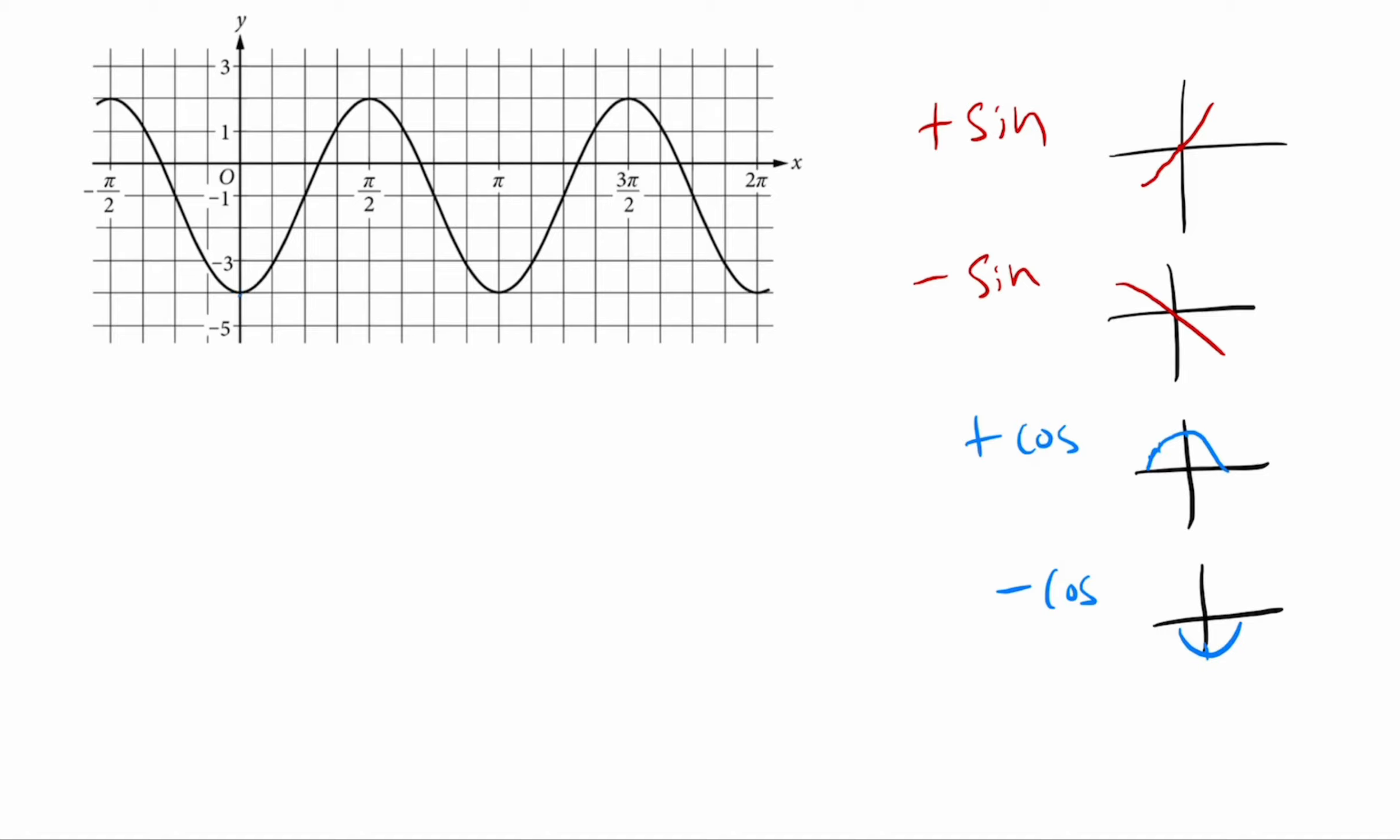With that in mind, since this starts at the minimum, we can use a negative cosine as our overall function. Once we've decided on that, our form so far could just be negative A cosine of Bx plus C. So we have to now figure out our A, B, and C because we've decided on a negative cosine function.